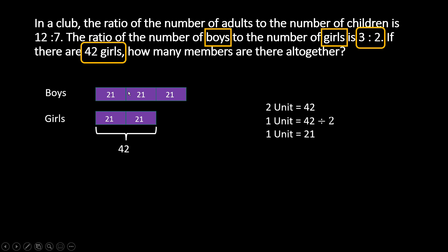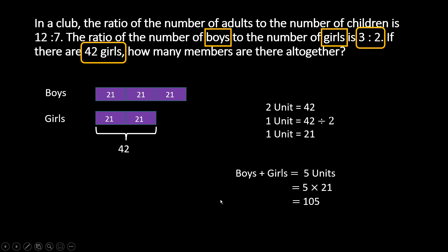Now we have the number of boys and the number of girls. For the next level, we will need the number of children. So boys plus girls — in total we have 5 units. And we know each unit is 21. So 5 times 21, that is 105.